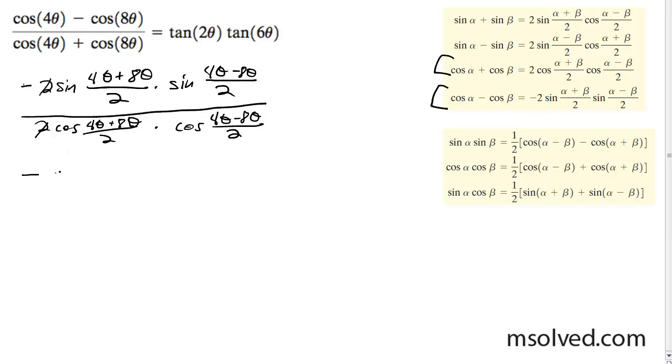So on top here we get negative sine 6 theta times sine negative 2 theta, over cosine 6 theta times cosine negative 2 theta.